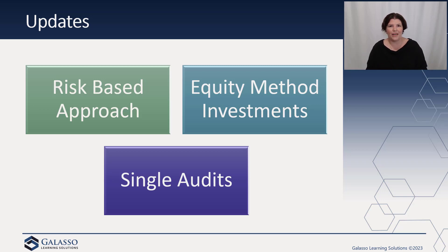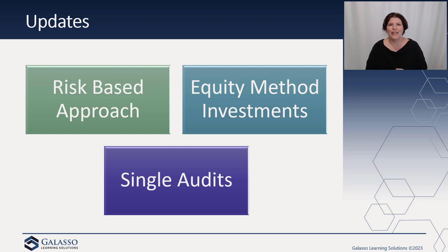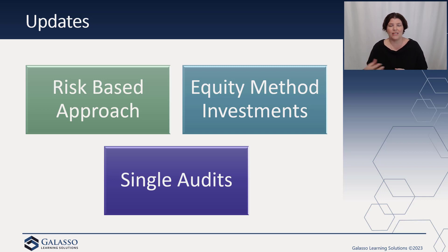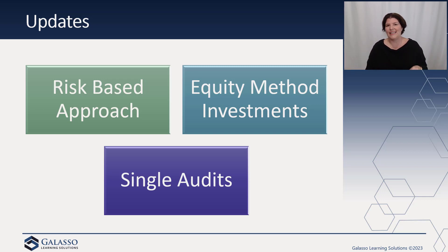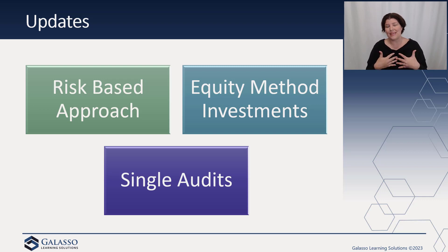For those who perform single audits, SAS 149 brings a very welcome change. There has been increasing attention to AUC Section 935 — prior to this, applying AUC Section 600 to a single audit was very difficult. Certain paragraphs of Section 600 were excluded via an appendix in AUC Section 935, but even with those exclusions, application was very complicated. The new approach adds two additional paragraphs to AUC Section 935 addressing the use of other auditors, and states that AUC Section 600 is not applicable in its entirety to single audits.